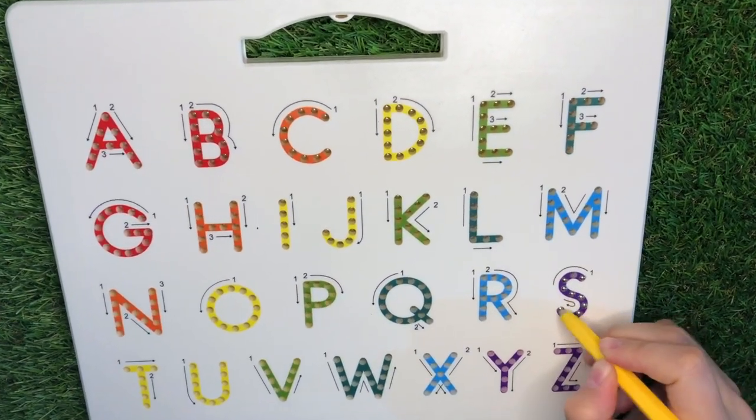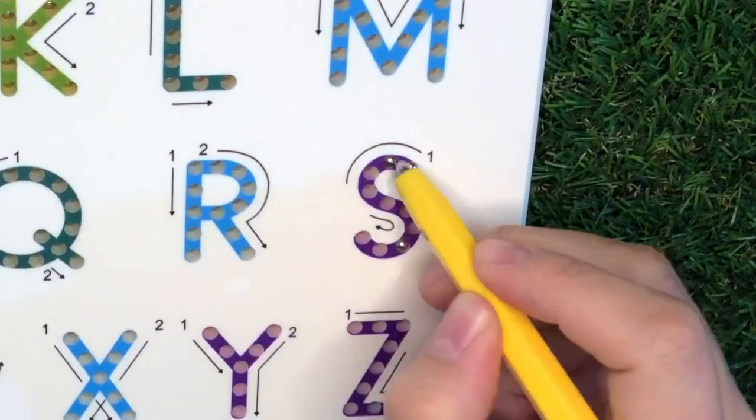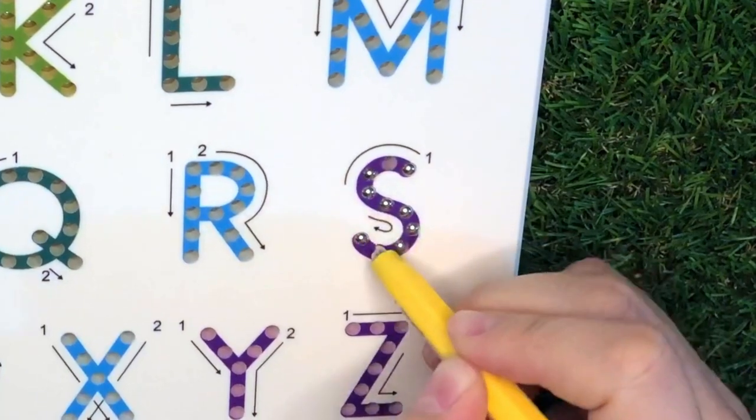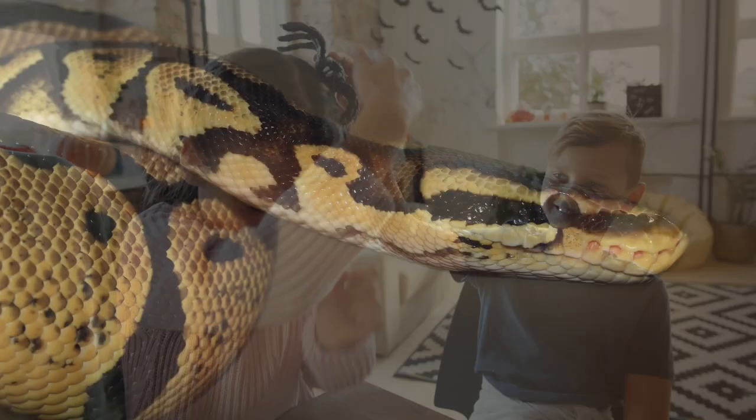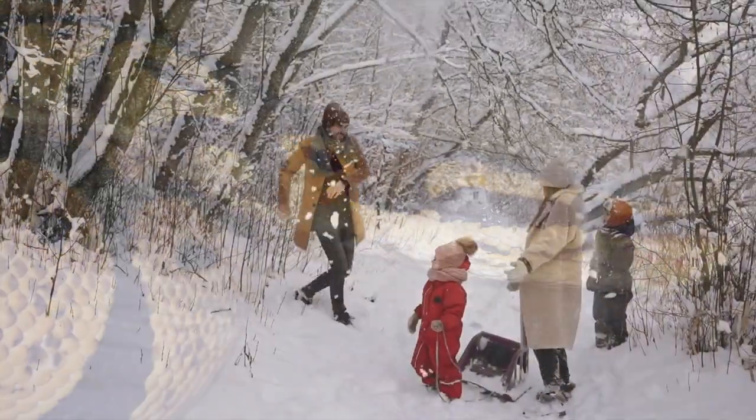Letter S. Pull back and around, down, and back around. S is for spider, snake, and snow.